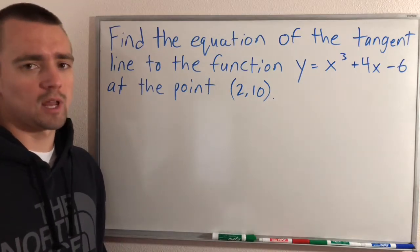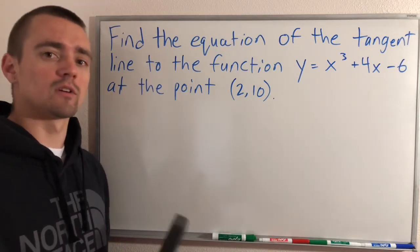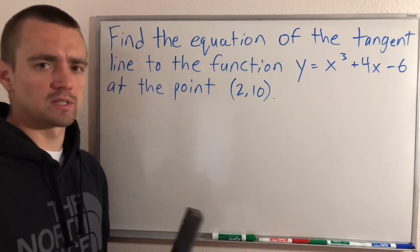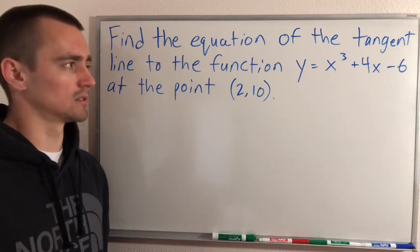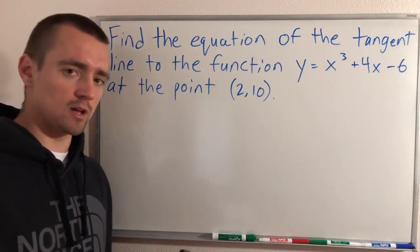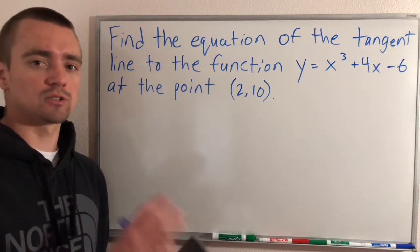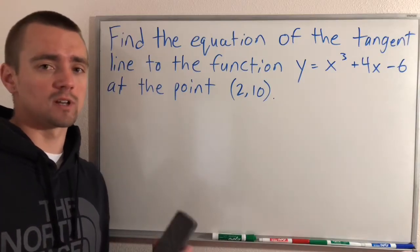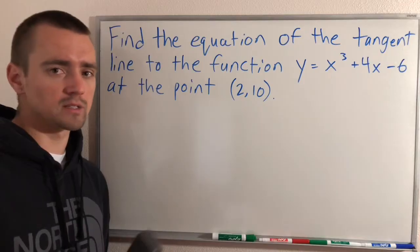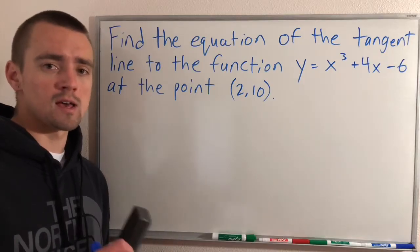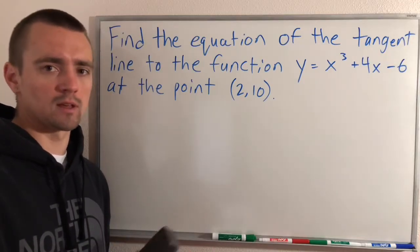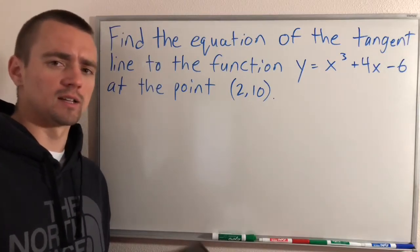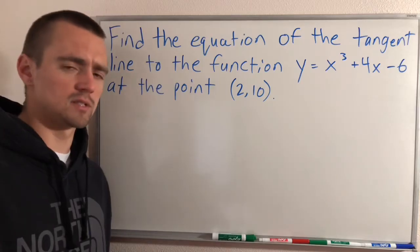When you're looking at a problem like this, you want to think about two things to start, and both relate to what a tangent line actually is. In general, a tangent line to a function at a specific point is a line that has the same slope as that function at that point, and it also has to go through that point on the function. We're going to consider each of those things separately.